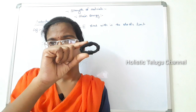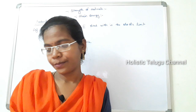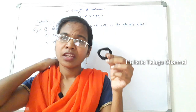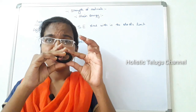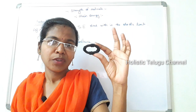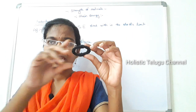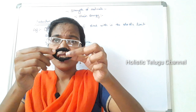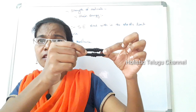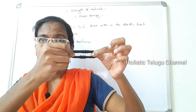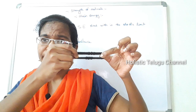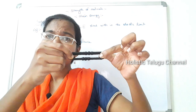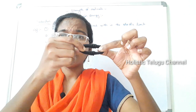Let me explain with an example. This is the elastic body in its original position. Now you apply an external force to it. What happens in this position — this elongation is going to be a deformation.